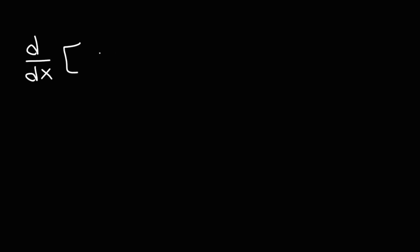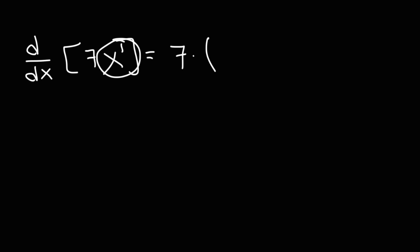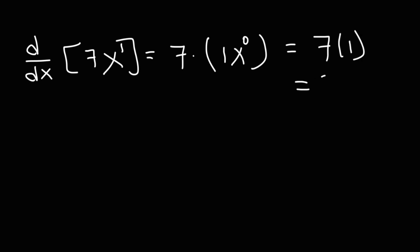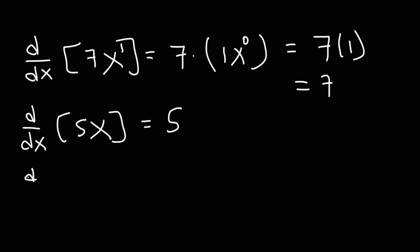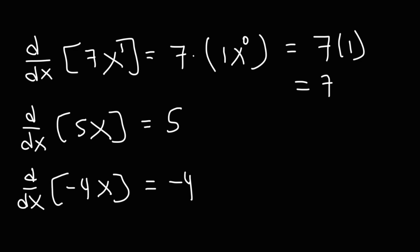Now, what if we want to find the derivative of 7x? Well, keep in mind this is x to the first power. So it's going to be 7 times the derivative of x to the first power, which is 1x to the zero power. And anything raised to the zero power is 1, so the answer is just 7. So the derivative of 5x is simply 5, and the derivative of negative 4x is simply negative 4, following that same pattern.